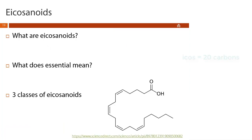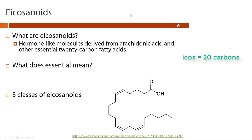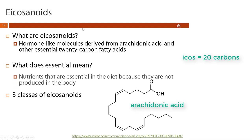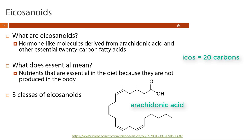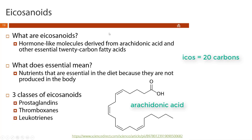Now let's talk about eicosanoids. Eicosanoids are hormone-like molecules derived from arachidonic acid and other essential 20-carbon fatty acids. We refer to eicosanoids as hormone-like because they're produced locally, unlike hormones which regulate distant organs. 'Essential' here means nutrients that must come from the diet because they cannot be produced in the body. We'll look at three different classes of eicosanoids: prostaglandins, thromboxanes, and leukotrienes.